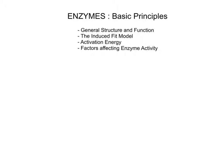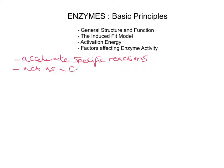Enzymes are globular protein molecules that accelerate specific reactions — that is their job. They are a type of catalyst in that they speed up reactions without actually changing the products or equilibrium of the reaction. So they speed up reactions without changing the products or being used themselves, and they are substrate specific.